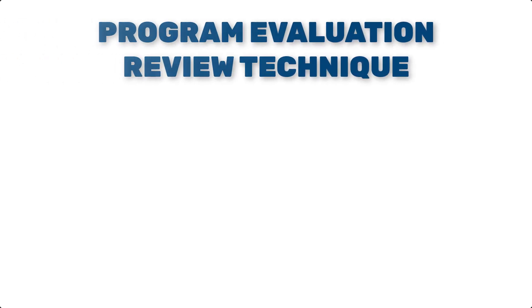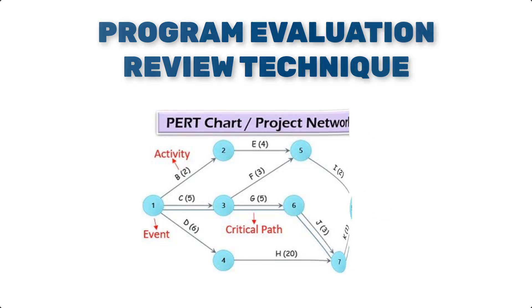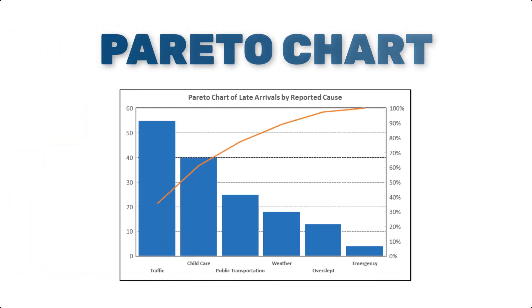Another powerful tool is the PERT chart, or Program Evaluation Review Technique. If your project involves complex dependencies, PERT charts can help you map out these relationships and estimate timeframes more accurately. PERT charts are another valuable tool, especially for identifying the most significant factors in a project. Based on the 80-20 rule, PERT charts help you focus on the 20% of tasks or issues that will produce 80% of the results.